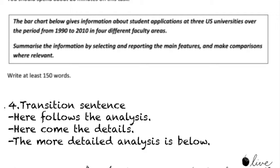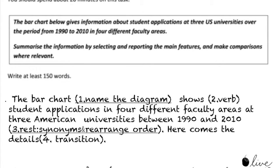So by combining all the techniques we've learned, we can rewrite the question and make it into something like this: 'The bar chart' — the first part, name the diagram — 'shows' — this is the verb — 'student applications in four different faculty areas at three American universities between 1990 and 2010. Here come the details.' That's the transition sentence. It's so easy to rewrite the introduction paragraph for Writing Task 1.